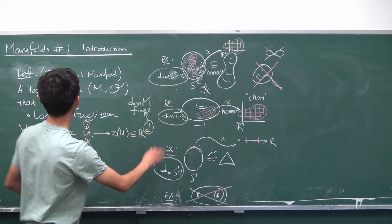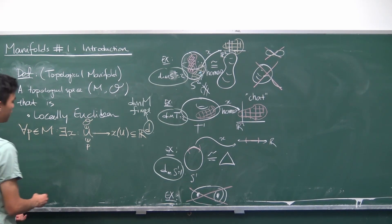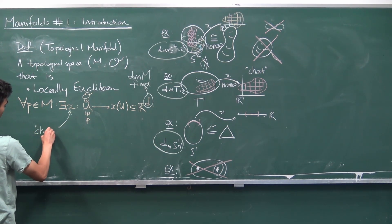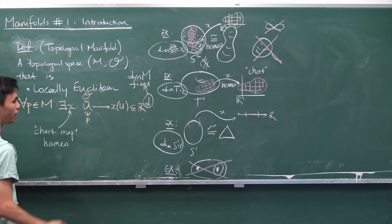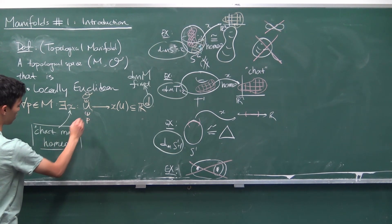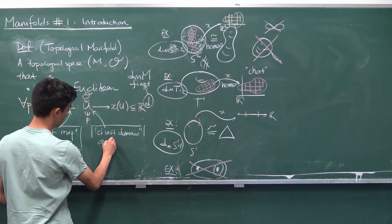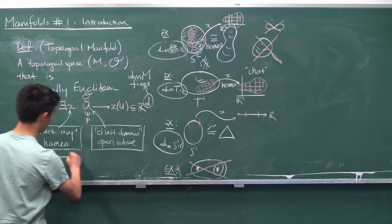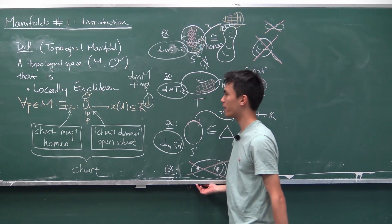So that's what it means for a topological manifold to be locally Euclidean — you just need that condition to hold. The map x is what we call a chart map, and it has to be a homeomorphism — bijective and continuous in both directions. The domain U of x is called the chart domain, and it must be an open subset of the topological space coming from the topology. Together, the pair (U, x) is what we call a chart.